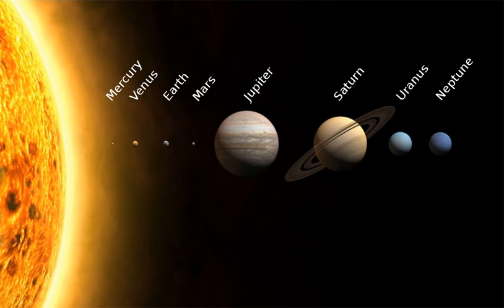There is an image of the solar system where distances are to scale but objects are not. There is then another image showing distances of selected bodies of the solar system from the Sun. The left and right edges of each bar correspond to the perihelion and aphelion of the body respectively. Hence, long bars denote high orbital eccentricity. The radius of the Sun is 0.7 million kilometres, and the radius of Jupiter, the largest planet, is 0.07 million kilometres, both too small to resolve on this image.